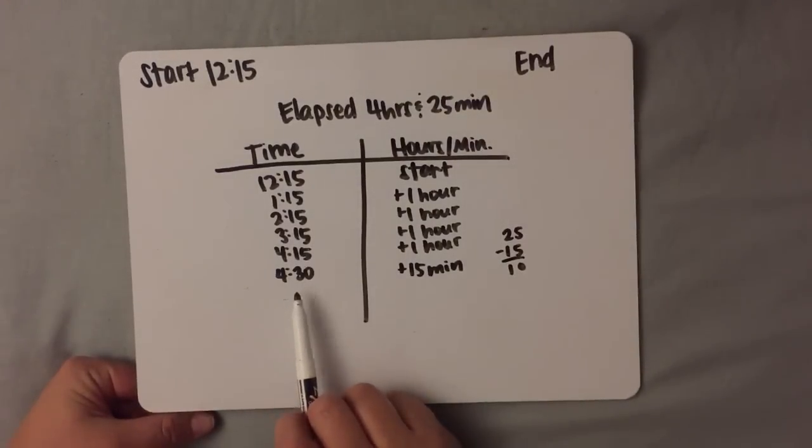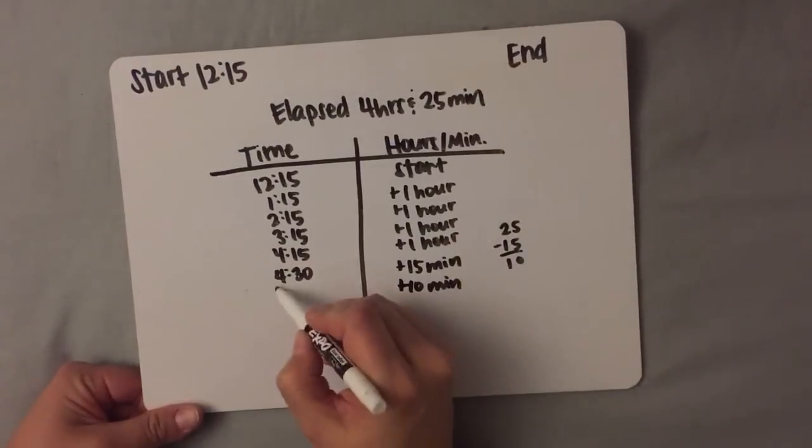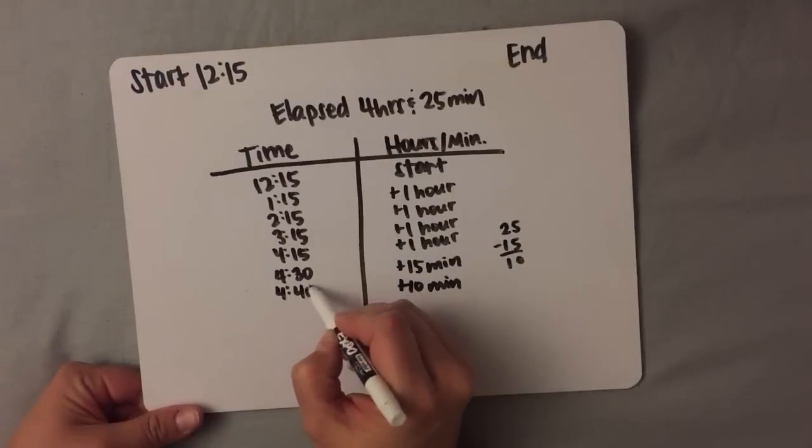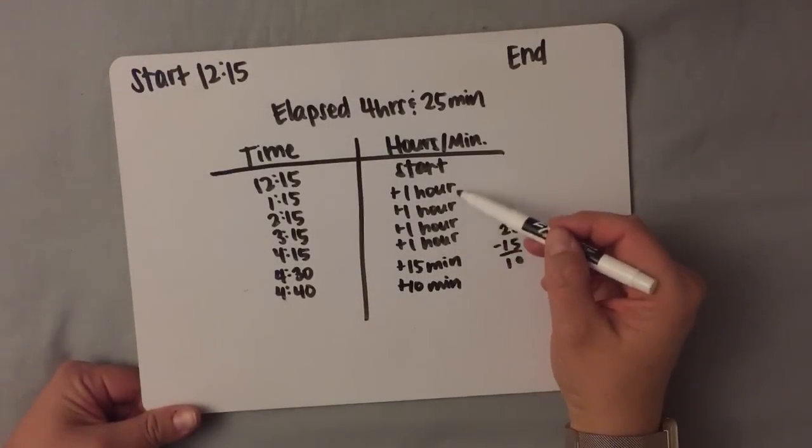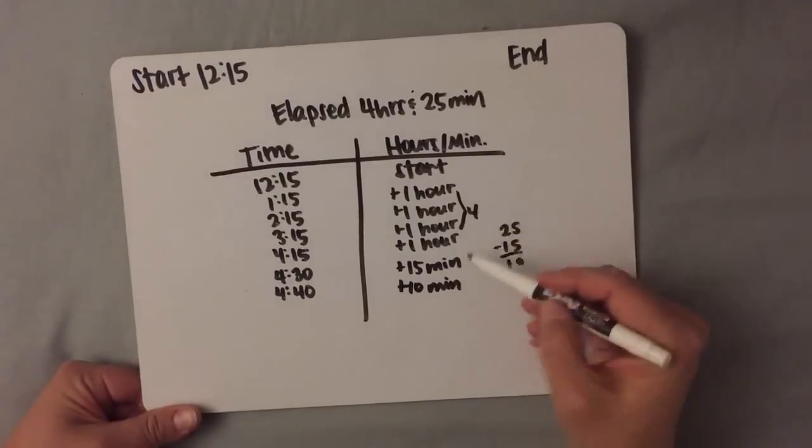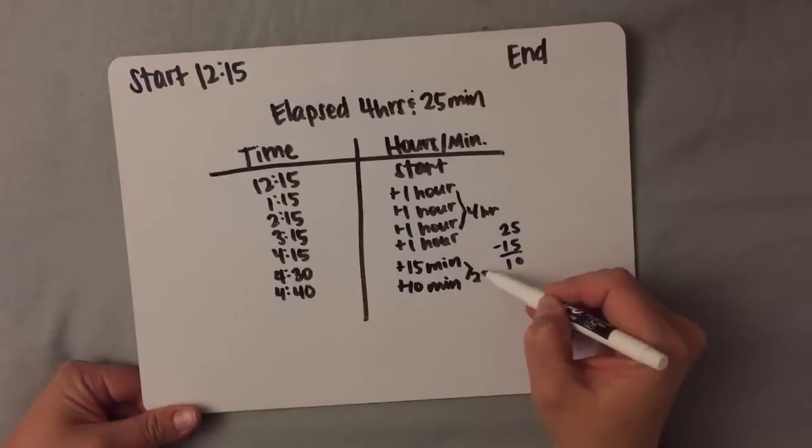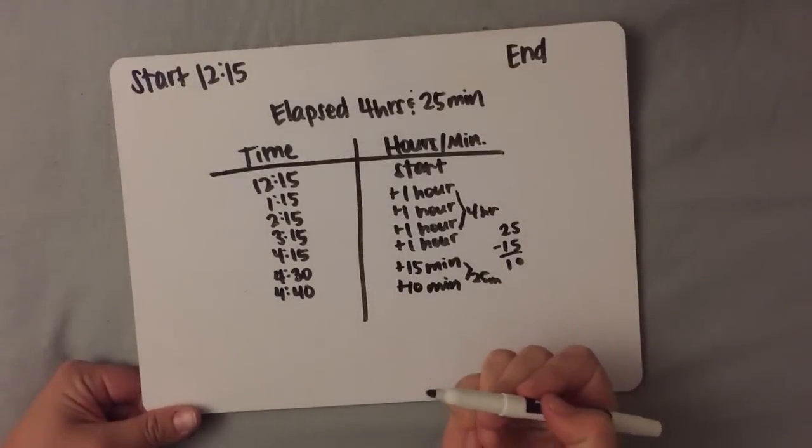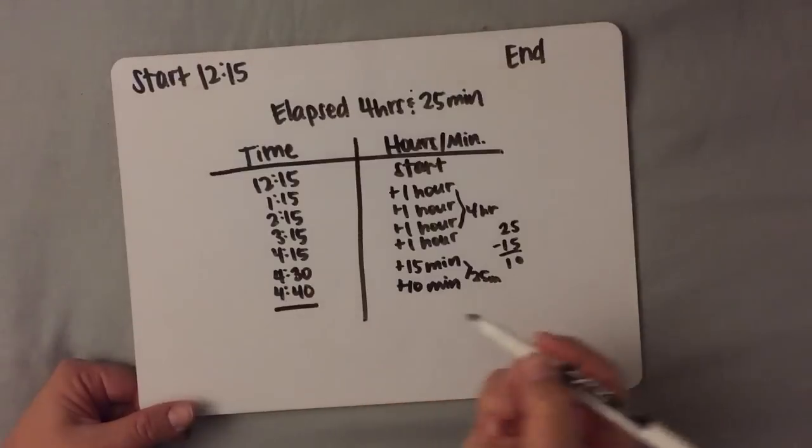Well, it's easy to add 10 onto 4:30. So I'm going to add 10 minutes, and it's going to take me to 4:40. I've used up all of my hours, which are 4, and I've used up all of my minutes, which was 25. So I've used up all of my elapsed time, and I've ended with 4:40.